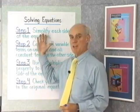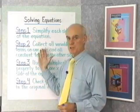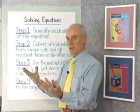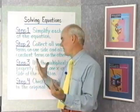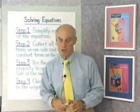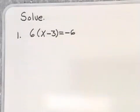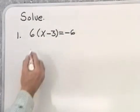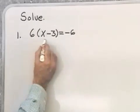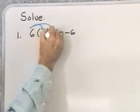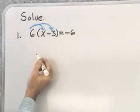So, we simplify each side, use the addition property to separate the variable terms to one side and constant terms to the other. Then we use the multiplication property. Here we have an equation, and we need to start by separating the terms using the distributive property.